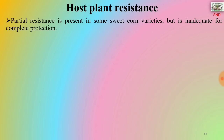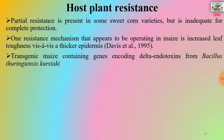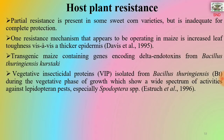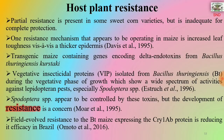Host plant resistance: partial resistance is present in some sweet corn varieties but is inadequate for complete protection. One resistance mechanism operating in maize is increased leaf toughness via a thicker epidermis. Transgenic maize containing genes encoding delta-endotoxins from Bacillus thuringiensis, and vegetative insecticidal proteins (VIP) isolated from Bt during the vegetative phase of growth, show a wide spectrum of activity against lepidopteran pests, especially Spodoptera species. However, development of resistance is a concern, and field-evolved resistance to Bt maize expressing the Cry1Ab protein is reducing its efficacy in Brazil.